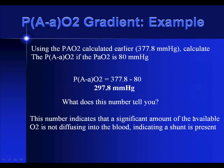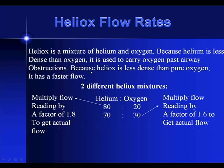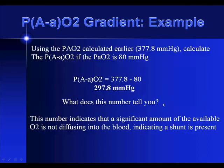You take your P(A)O2 and subtract your measured arterial O2. In this case, the number is very high, indicating that oxygen is not diffusing into the blood and that a shunt is most likely present. In a healthy individual, the gradient should be very small, with most oxygen diffusing across — so a large AA gradient points to a significant ventilation-perfusion mismatch or shunt.